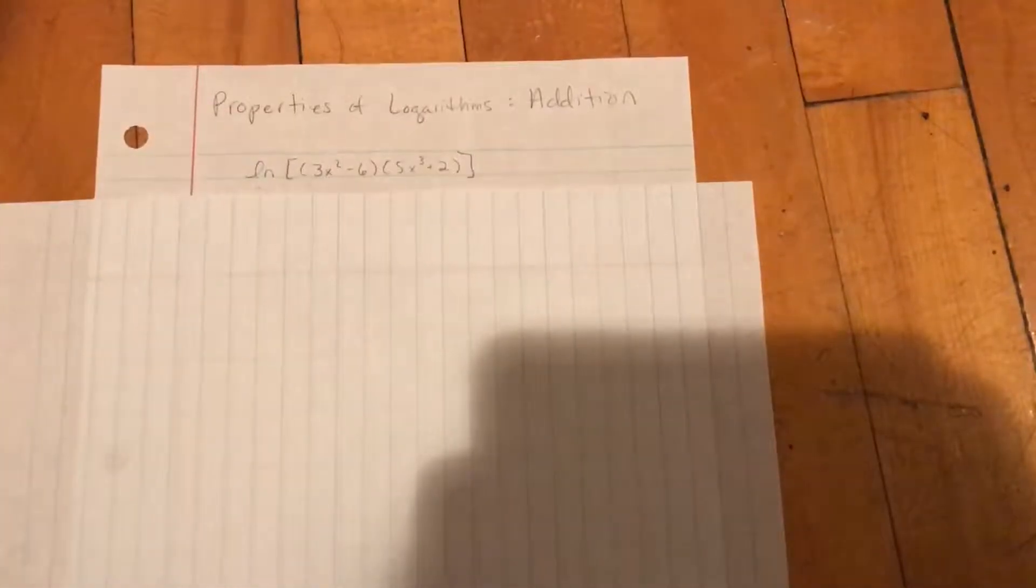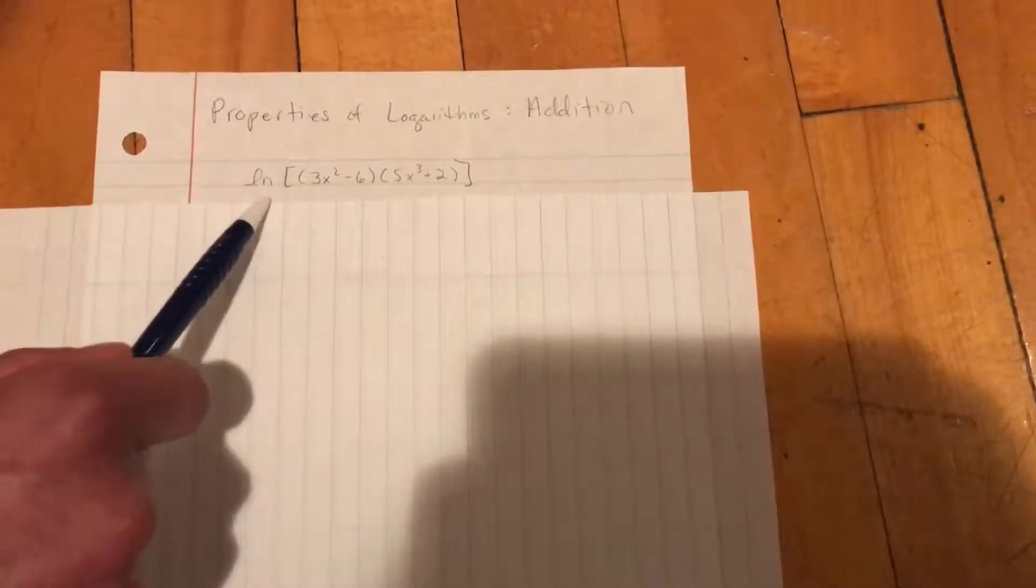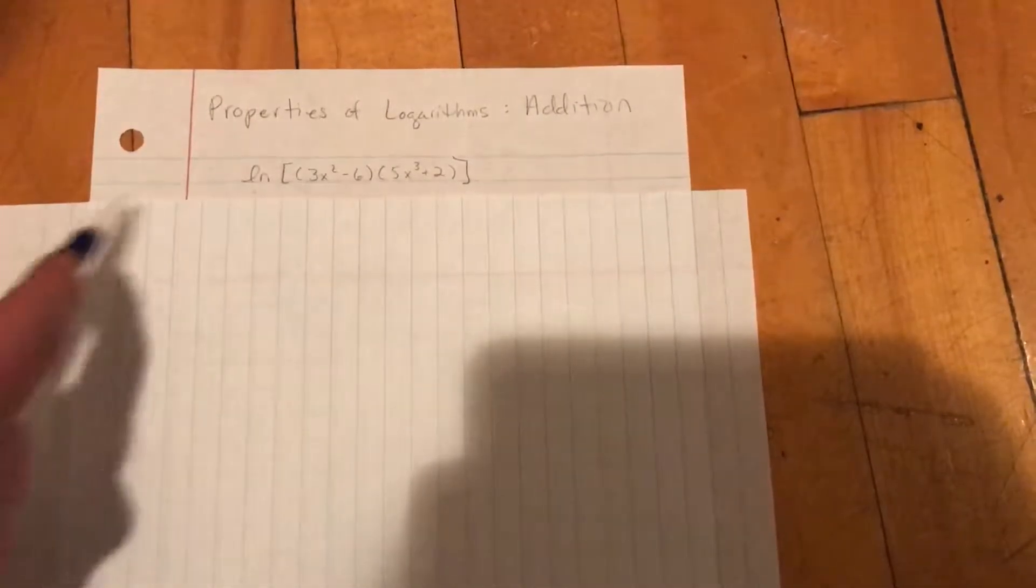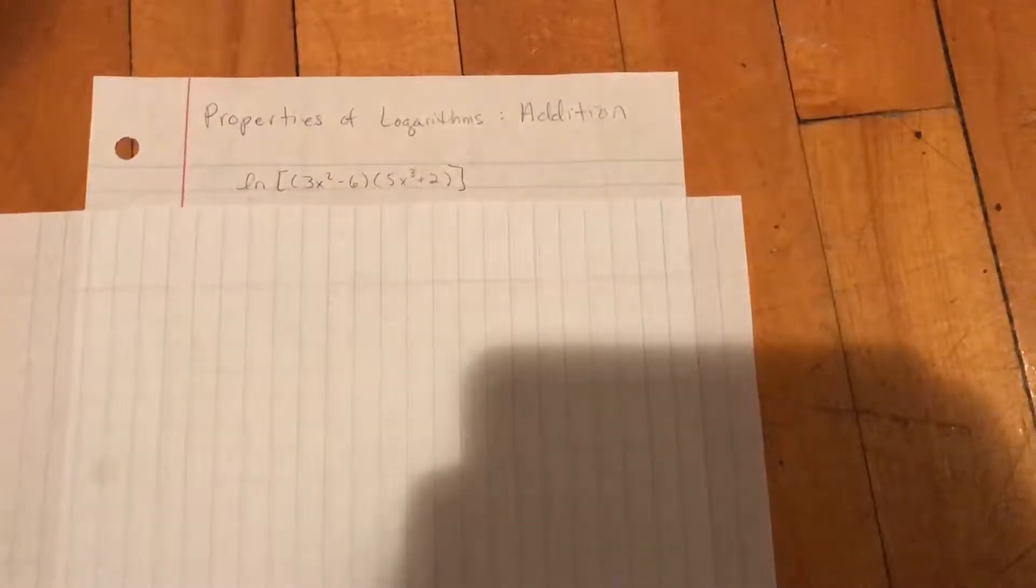In this video I'm going to show you how to do logarithms with the property addition. So we're given a logarithm, in this case it's a natural logarithm because we have ln, and you've got two things being multiplied together.